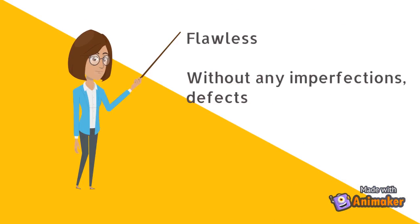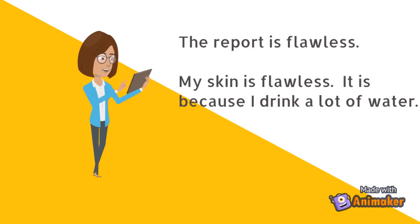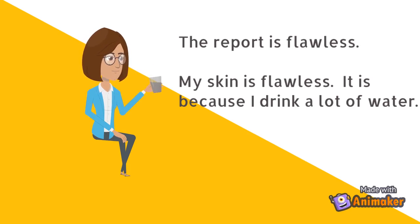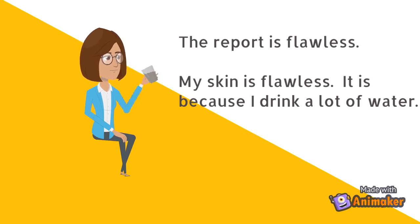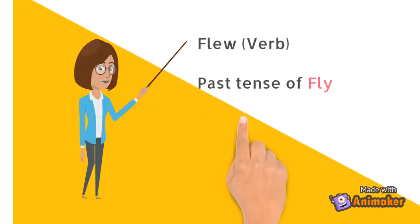Did you know the opposite word of 'flaw' is 'flawless', which means without any defects or without any imperfections? Let's use the word flawless in a sentence: 'The report is flawless.' 'My skin is flawless — it is because I drink a lot of water.' Flawless skin is something beautiful without any blemishes.